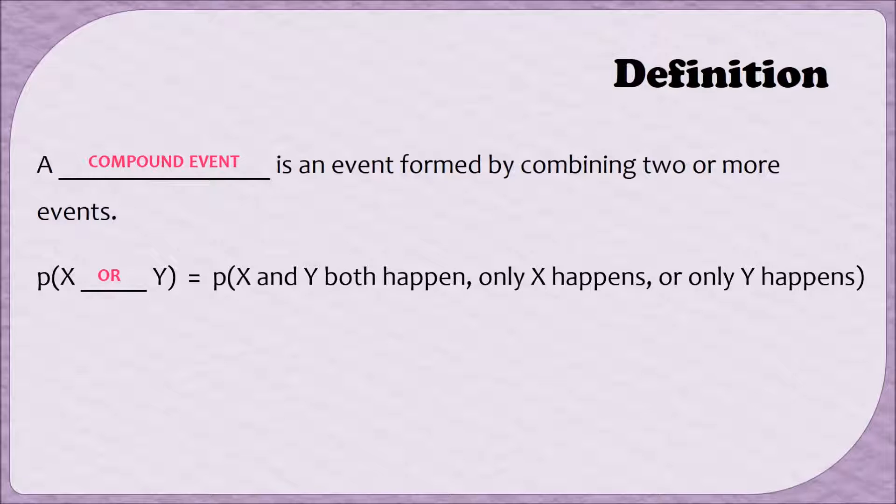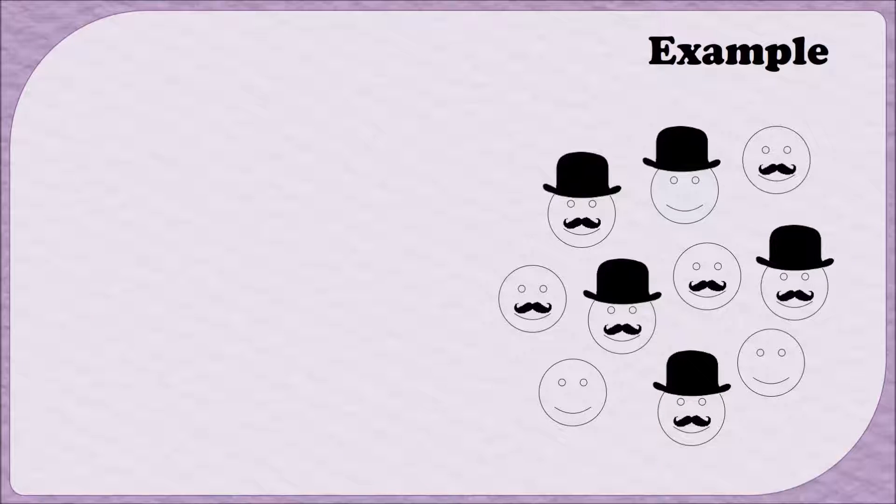The second type of compound event that we'll be discussing is an AND. When I say X and Y happen, that means that both events have to happen in order for X and Y to occur. Let's work on an example. Suppose we had this group of 10 people. Some of them are wearing hats, some of them have mustaches, and some are just totally plain. Let's make sure we understand the definitions of these compound connectives.